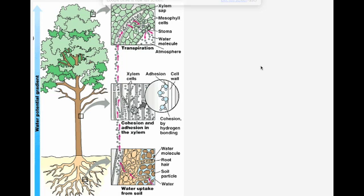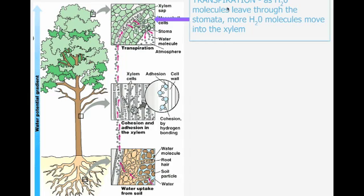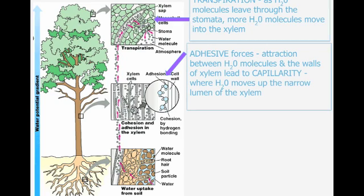We can look at this diagram of a tree to examine how the cohesion-adhesion-transpiration theory works. We're going to look at them in a slightly different order, but they all work together to get water from the roots to the leaves. First, we have transpiration. Transpiration is simply the evaporation of water from the leaves of the plant. When the stomata open, water molecules are able to move out into the atmosphere, and as this takes place more water molecules are then able to move into the xylem from the roots — a constant stream of water.